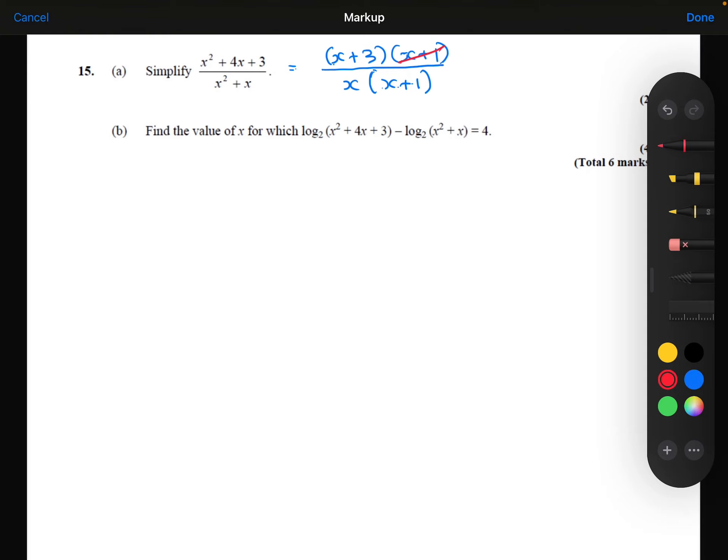Now I notice that the x plus 1s cancel out. And so I just get left with x plus 3 over x.